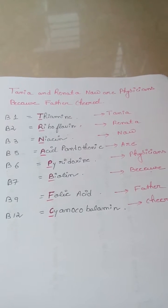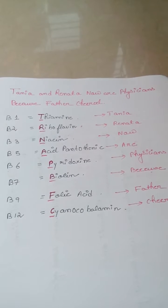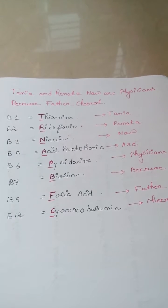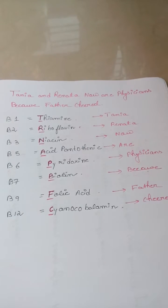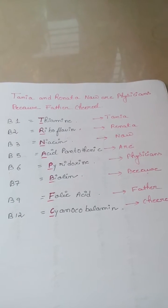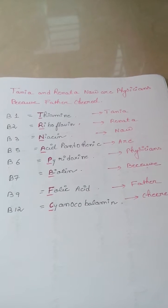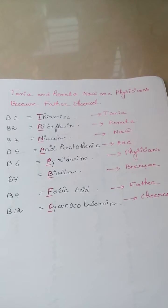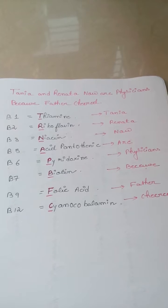So we have B1, B2, B3, B5, B6, B7, B9 - these are the different forms of vitamin B. And the names are written sideways like vitamin B1 equals thiamine, B2 equals riboflavin, B3 niacin, B5...